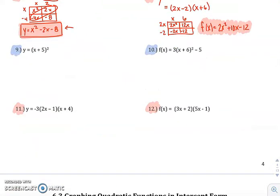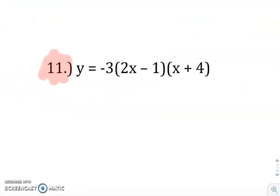Alright, let's do one more, and you guys can try number 12. So let's do number 11. So that negative 3 just gets distributed to that first set of parentheses.